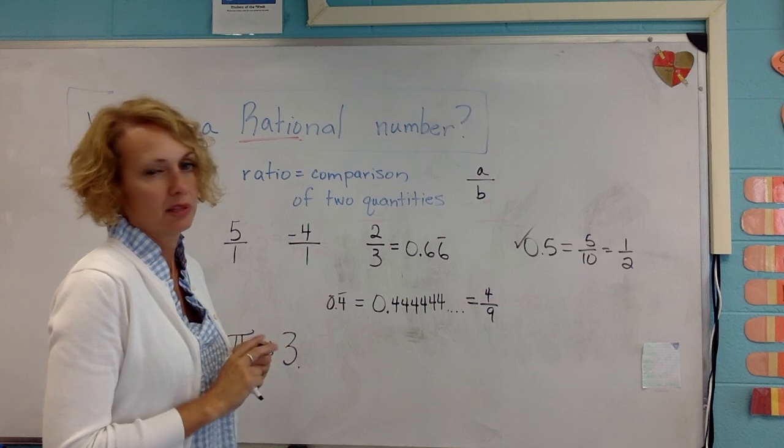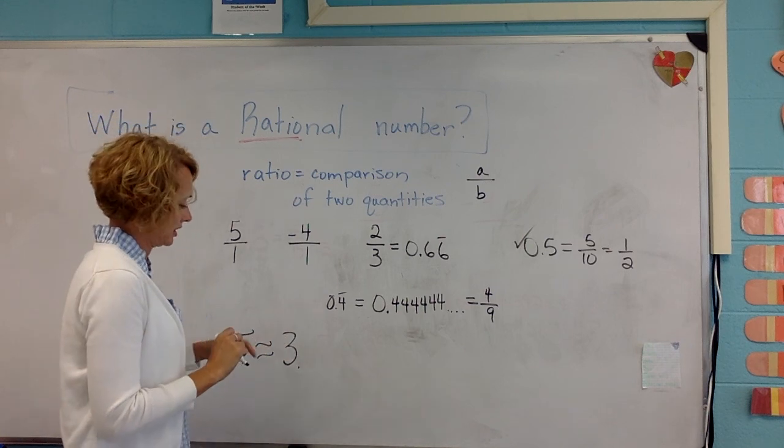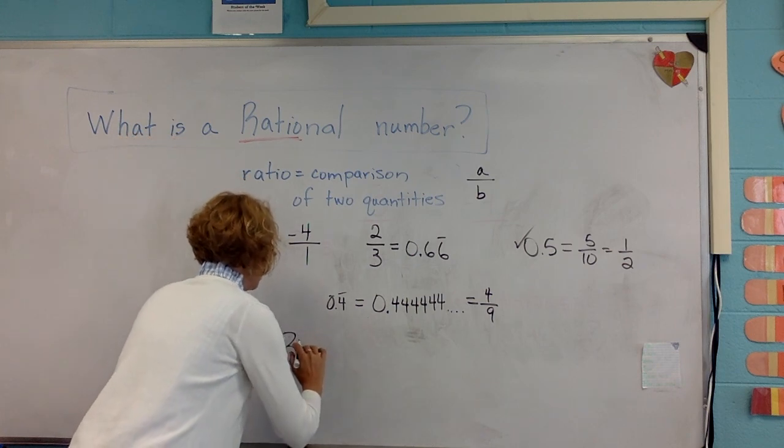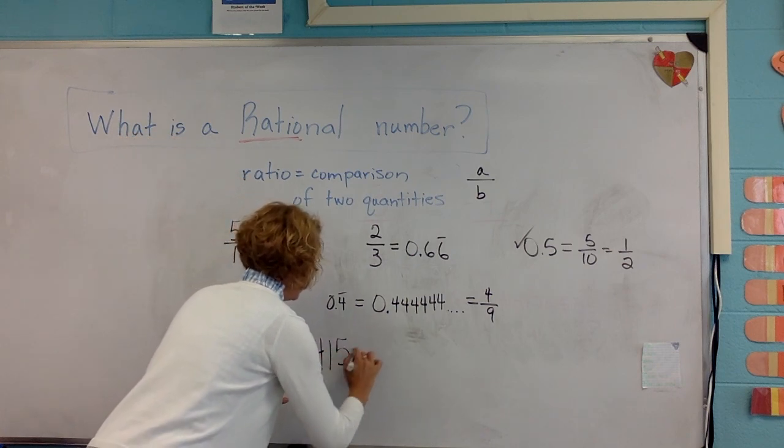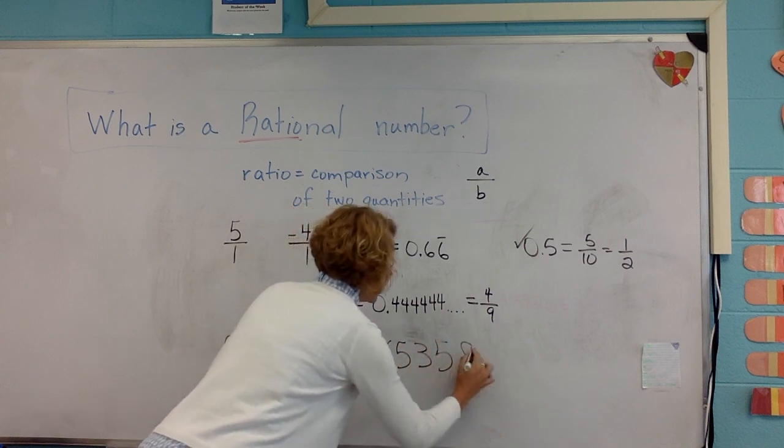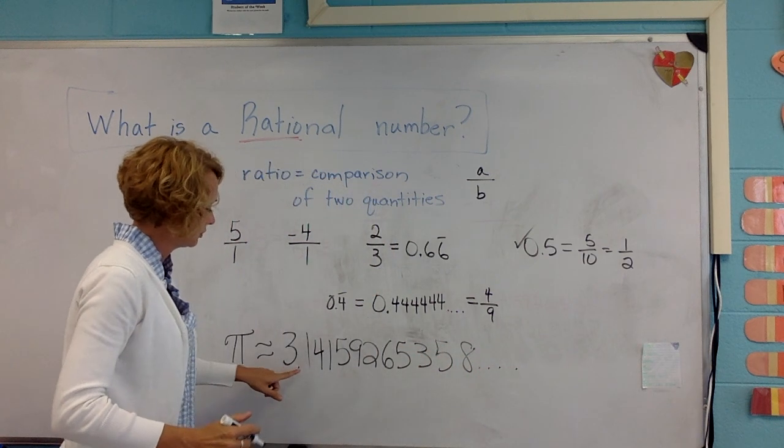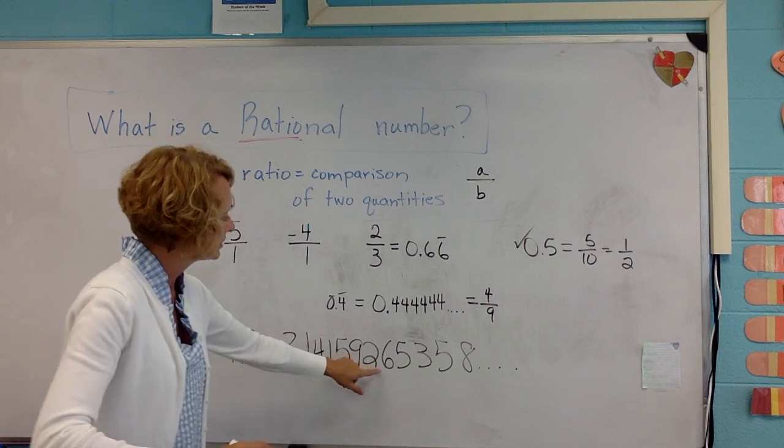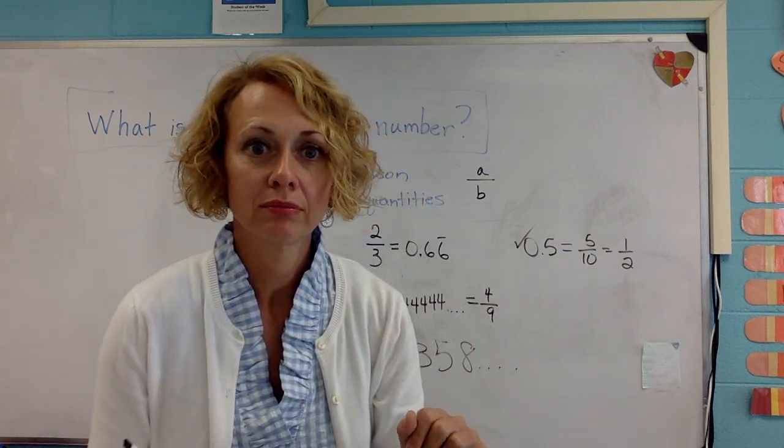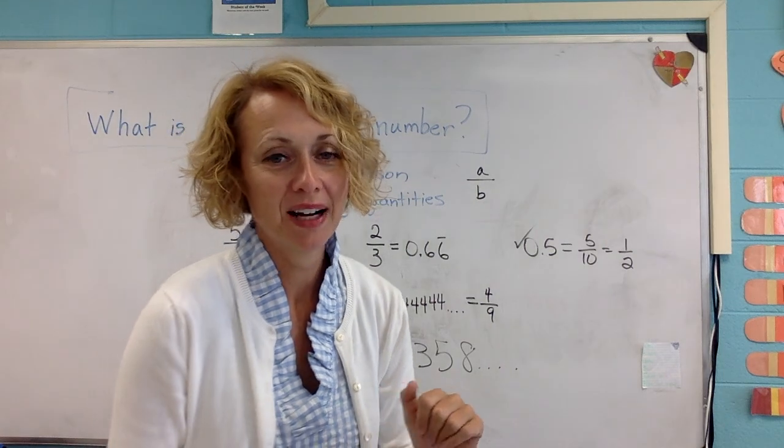It doesn't stop. Let me see if I can remember some of the digits of pi. I think it's, I have to sing the song to do it. Pi equals three point one four one five nine two six five three five eight. I can't remember all of them. But there's the idea. Pi goes on forever.